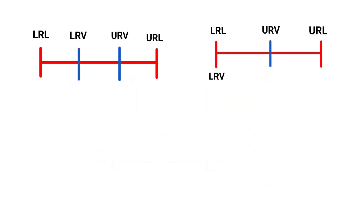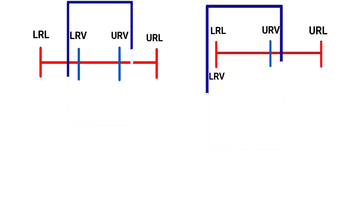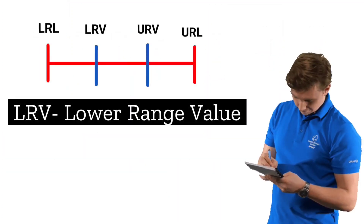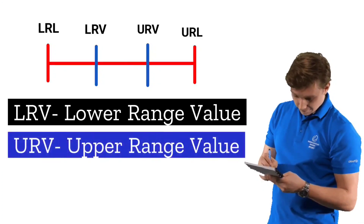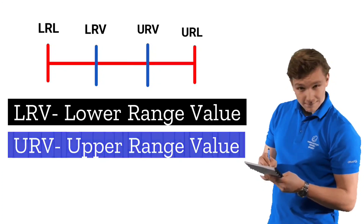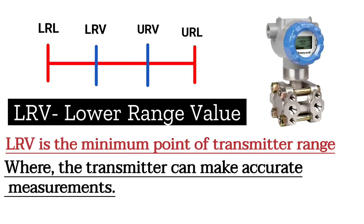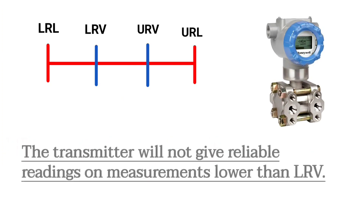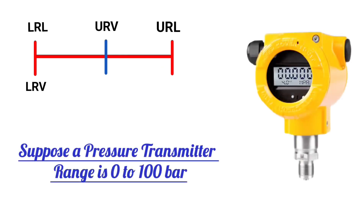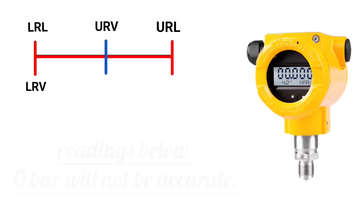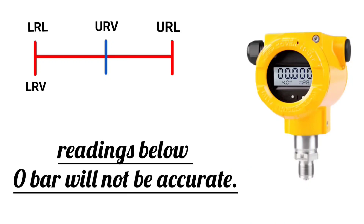In instrumentation, LRV and URV are also called transmitter range or transmitter calibration range. LRV means Lower Range Value and URV means Upper Range Value. LRV is the minimum point of the transmitter's range where the transmitter can make accurate measurements. The transmitter will not give reliable readings on measurements lower than LRV. For example, if a pressure transmitter range is 0 to 100 bar, the LRV will be 0 bar, meaning readings below 0 bar will not be accurate.